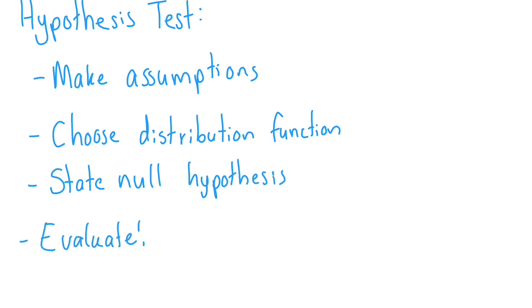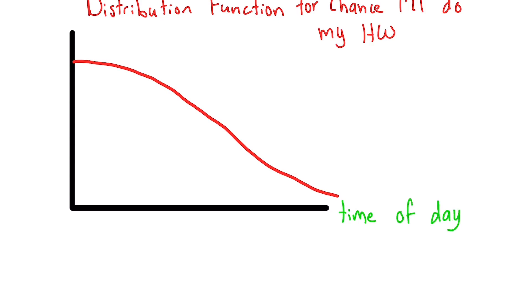In oversimplified terms, a statistical distribution function shows how likely something is to occur. From a graphical perspective, the area under a particular region in a distribution function represents the likelihood that that event will occur.